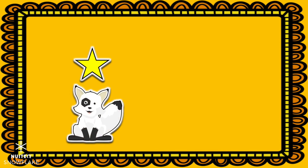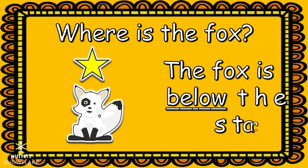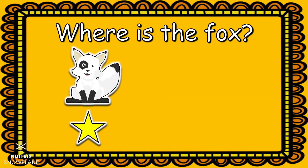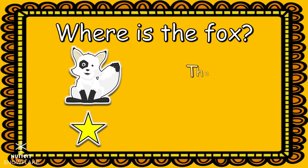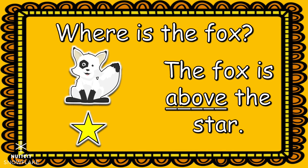We will use positional words to talk about where the fox is. Where is the fox? The fox is below the star. Below is our positional word. Where is the fox? The fox is above the star. Above is our positional word.